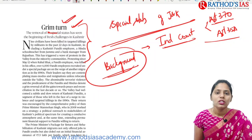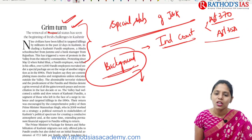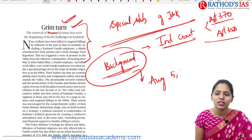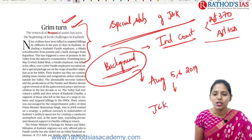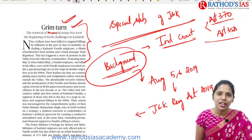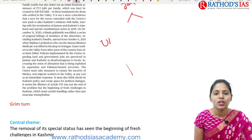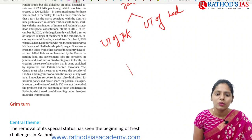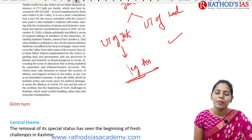Due to the dilution of Article 370 and Article 35A, which was mainly done on August 5th–6th, 2019, the government came up with the Jammu and Kashmir Reorganization Act of 2019. It bifurcated the state of Jammu and Kashmir into two union territories: the Union Territory of Jammu and Kashmir, which has a legislative assembly, and the Union Territory of Ladakh.